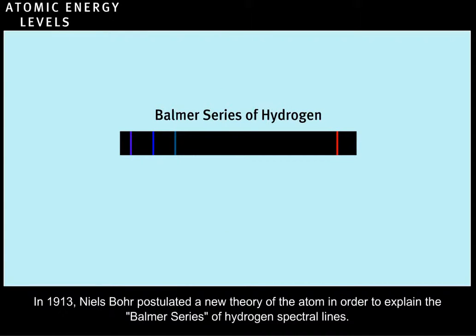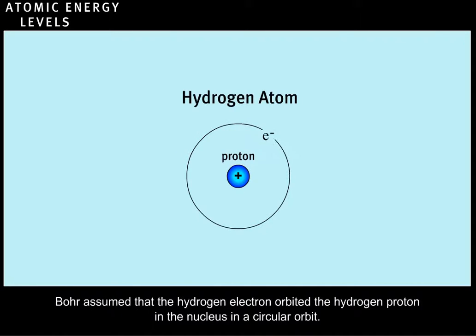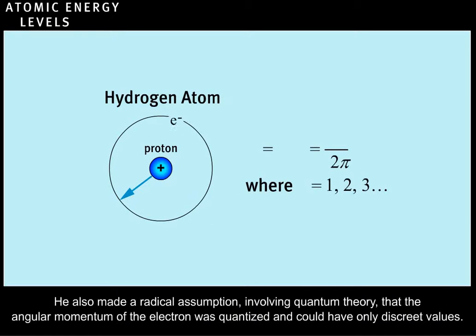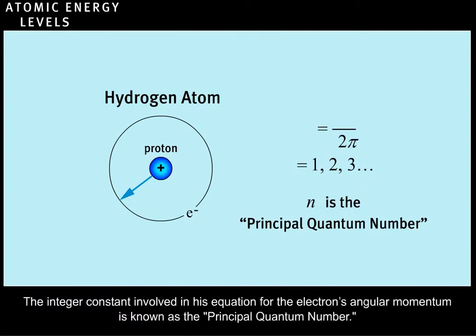In 1913, Niels Bohr postulated a new theory of the atom in order to explain the Balmer series of hydrogen spectral lines. Bohr assumed that the hydrogen electron orbited the hydrogen proton in the nucleus in a circular orbit. He also made a radical assumption involving quantum theory that the angular momentum of the electron was quantized and could have only discrete values. The integer constant involved in his equation for the electron's angular momentum is known as the principal quantum number.